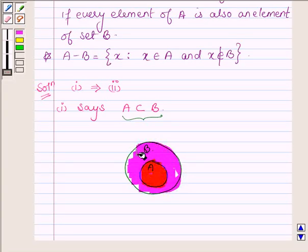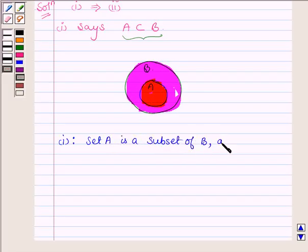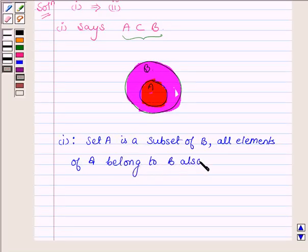Now from the Venn diagram we observe that set A is a subset of B. That is all elements of A belong to B also. And it's A is contained in B.